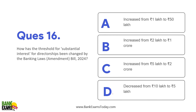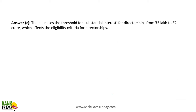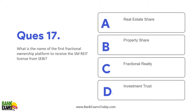How has the threshold for substantial interest for directorship been changed by the Banking Laws Amendment Bill 2024? Note it is a bill, not an act. The threshold has been increased from 5 lakhs to 2 crores. Substantial interest for directorship has been increased from 5 lakhs to 2 crores. Whenever it becomes an act, more details will be covered.